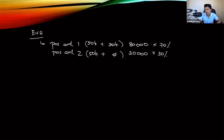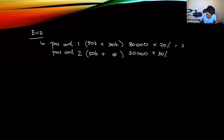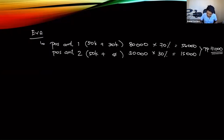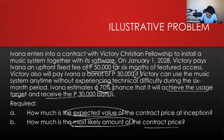Under the expected value approach: 80,000 × 70% = 56,000 and 50,000 × 30% = 15,000. The transaction price under the expected value approach is therefore 71,000 pesos as the final answer for requirement A.